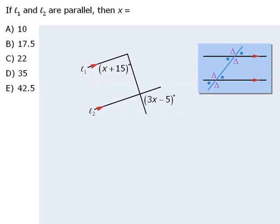So to make things easier, let's extend some of our lines. We'll extend this parallel line as well as the transversal, and this should make it easier to spot which angles are equal.